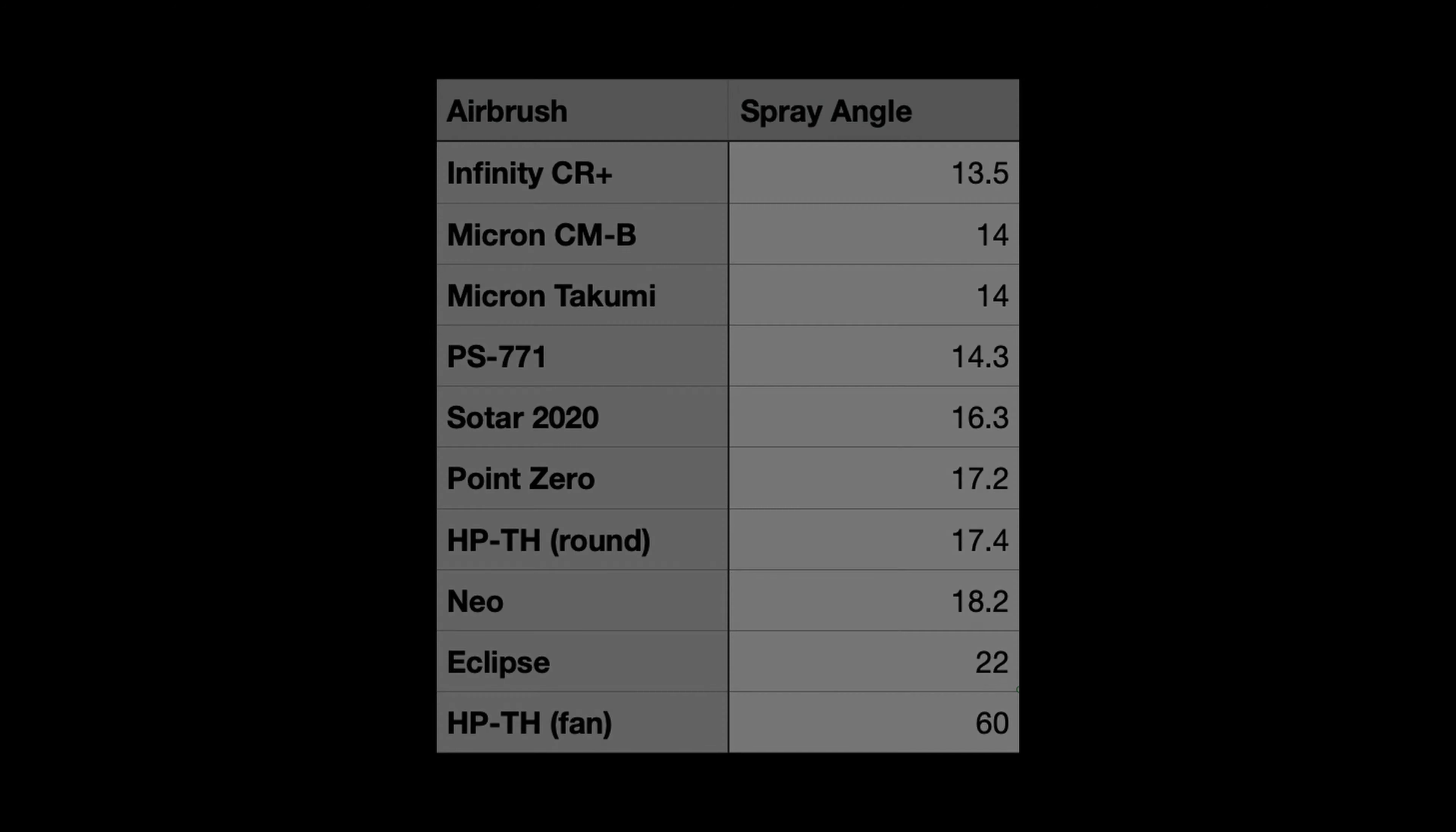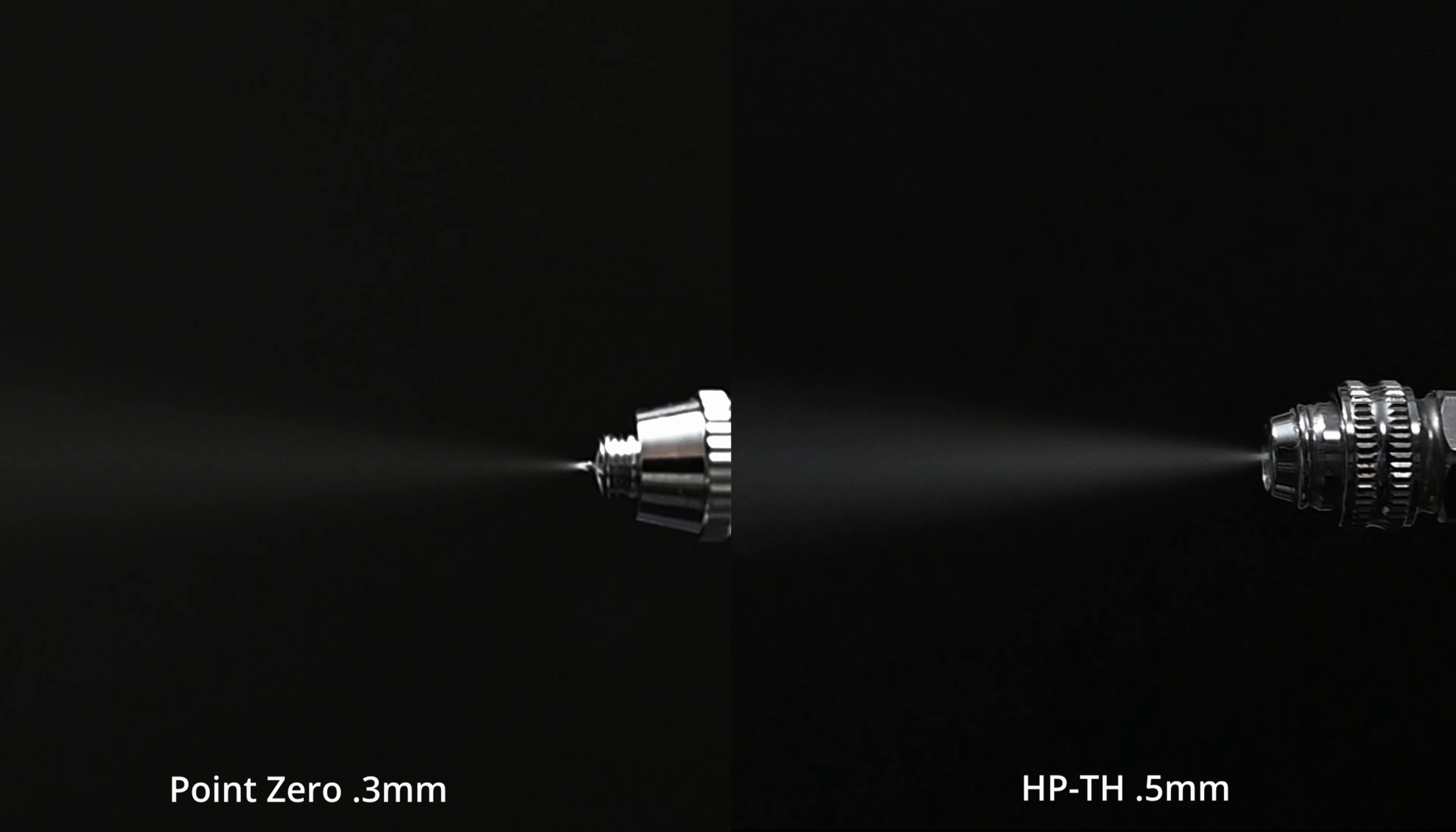Now if you watched any of the reviews of those airbrushes you were able to see that we were able to get very fine detail lines to around a quarter of a millimeter. And although the HPTH has a spray angle which is similar, the needle design is very different so the thin lines with this are much wider than you can get with a traditional airbrush.